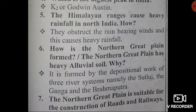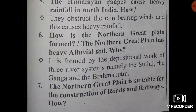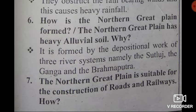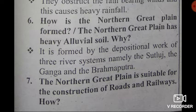Fifth question: The Himalayan ranges cause heavy rainfall in North India. How? Because they obstruct the rain-bearing winds and this causes heavy rainfall. Sixth question: How is the Northern Great Plain formed? It is formed by the depositional work of three river systems — the Sutlej River, the Ganga River, and the Brahmaputra River.